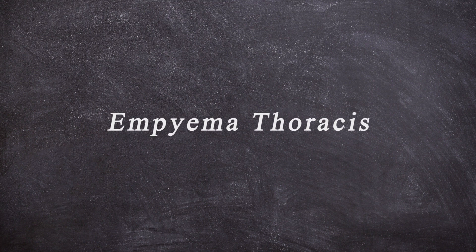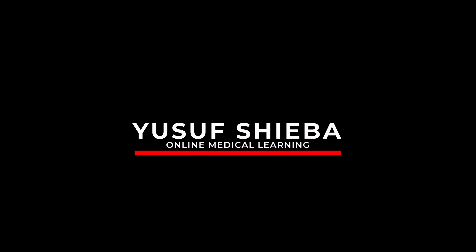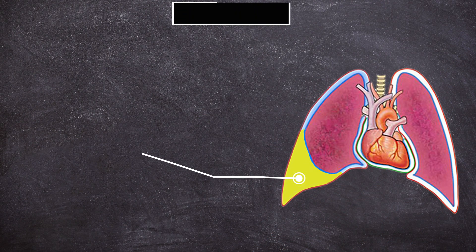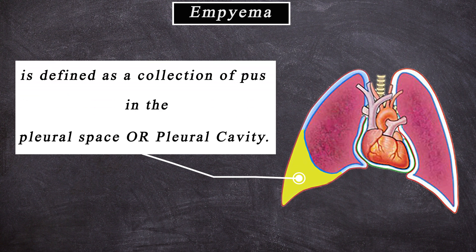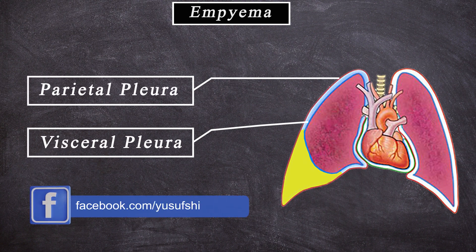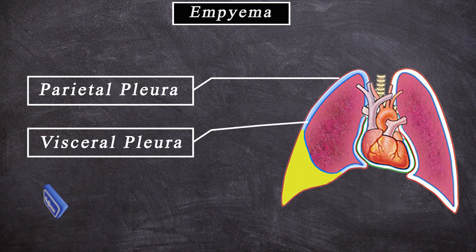Hi everyone, today I am going to talk about Empyema Thoracis. Empyema is defined as a collection of pus in the pleural space or pleural cavity. The pleural cavity is a space between the parietal and visceral pleura. It is a potential space because it contains a thin film of serous fluid.